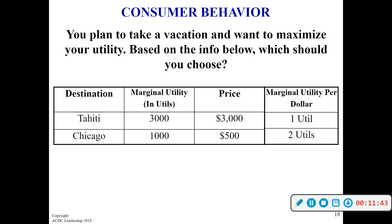But as with lots of things in this class, we've got to get into a per unit measure so that we can evenly compare. So we have to bring in the prices of these trips. If you go to Tahiti, it costs $3,000. To go to Chicago, it's only $500. Now we have to get utility per dollar spent — how many utils are you going to get for every single dollar spent? By going to Tahiti, you get one util for every dollar you spend. By going to Chicago, you get two utils for every dollar you spend. So in theory, you are going to get more happiness per dollar spent by going to Chicago than to Tahiti.